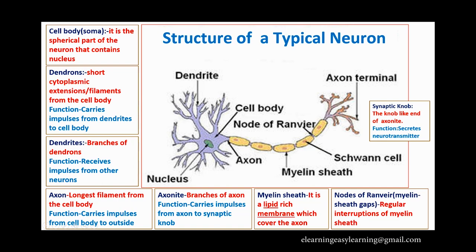The second part is dendrons — these are short cytoplasmic extensions or short branches from the cell body. At the end, the dendrons are branched and re-branched to form fine filaments, and these branches are called dendrites. Dendrons and dendrites perform the same function: they carry impulses from the neighboring neuron to the cell body.